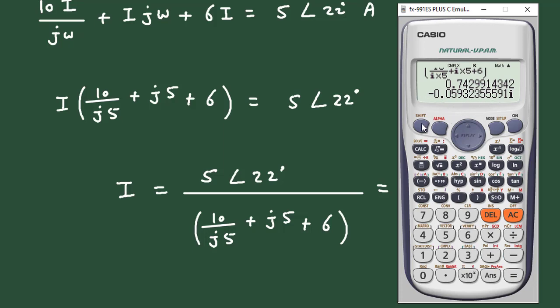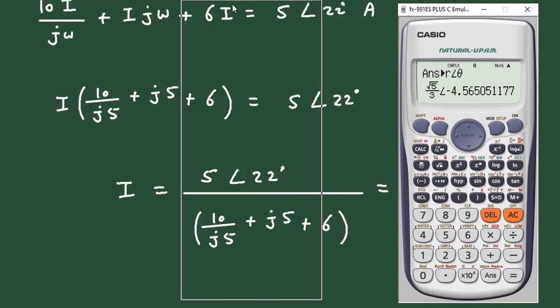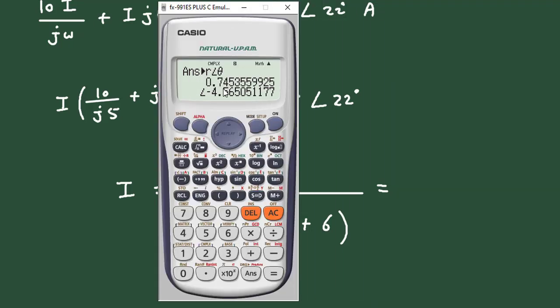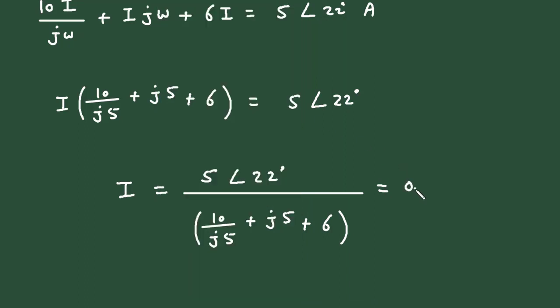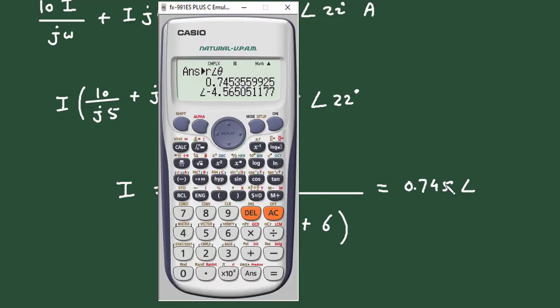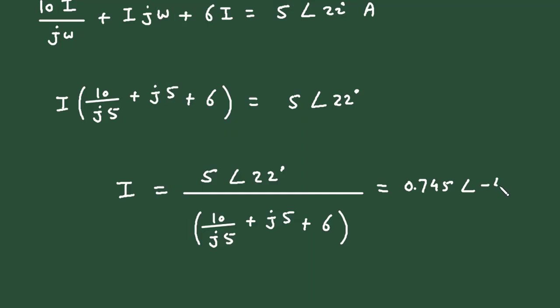Now, we will convert this into polar form. So, shift 2, 3. So, it is 0.745, 0.745 at an angle minus 4.56, minus 4.56 degree. And since it is current, so, its unit will be ampere.